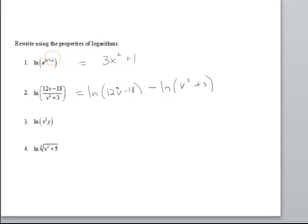On my third example, I have two things we can do. First, notice that I have a product. x cubed y means x cubed times y. So I'm using my product rule and I will write this as the sum of the natural log of x cubed and the natural log of y. Now this first expression can be simplified further because I have an exponent. This will come down as my coefficient. So now I can write this as 3 times the natural log of x plus the natural log of y.